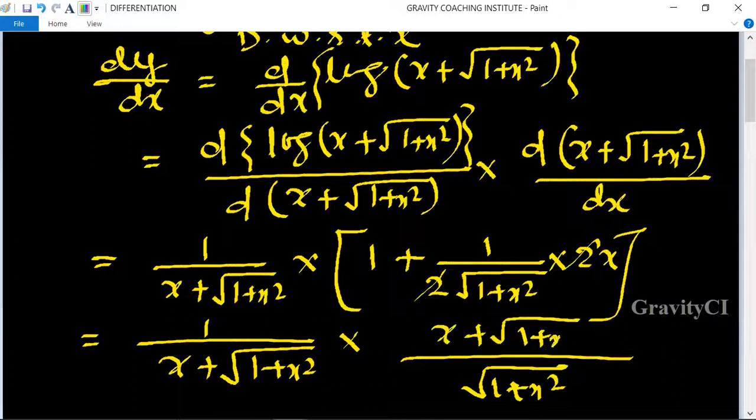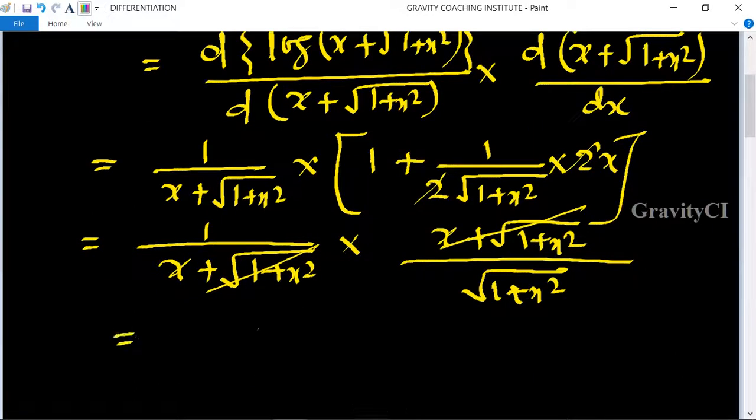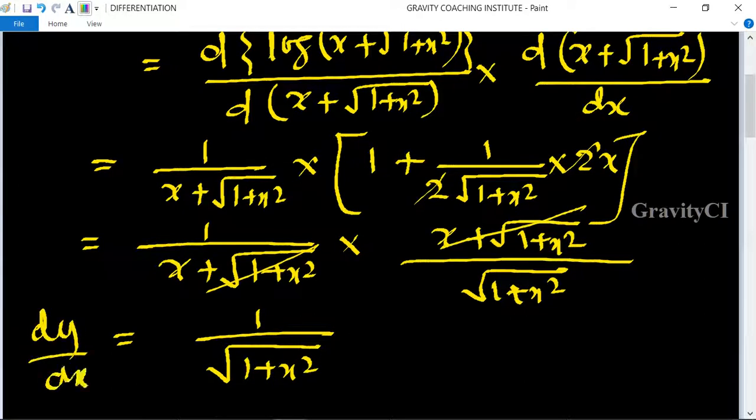(x + √(1+x²)) cancels out, so it equals 1/√(1+x²). Therefore dy/dx equals 1/√(1+x²), which is the required answer.